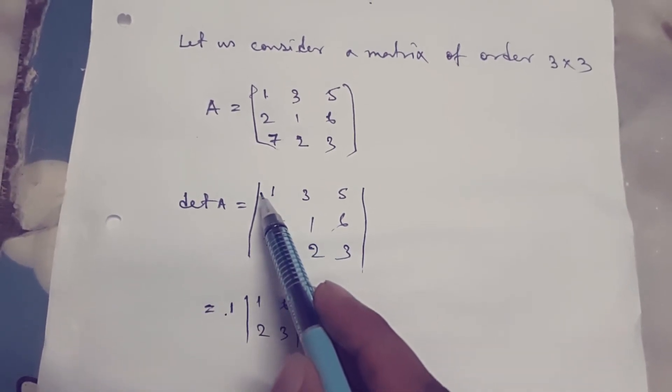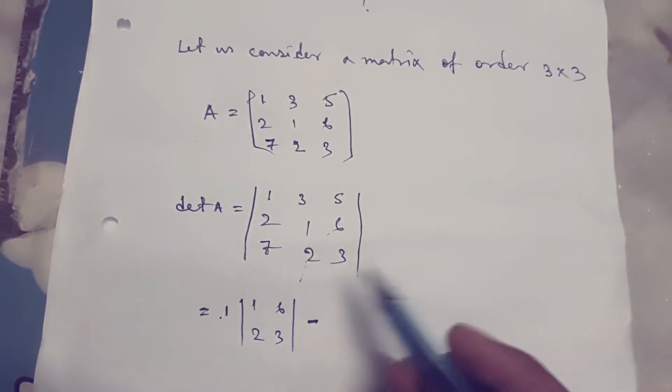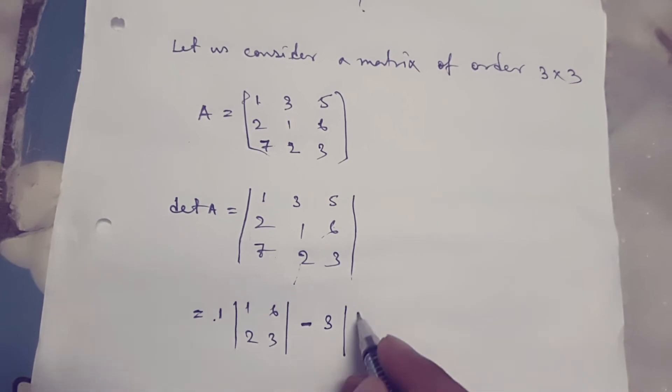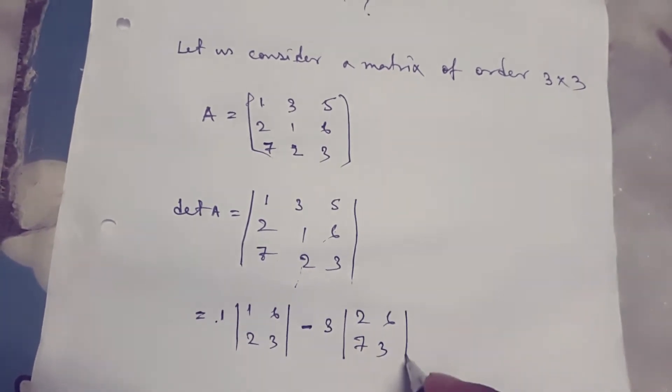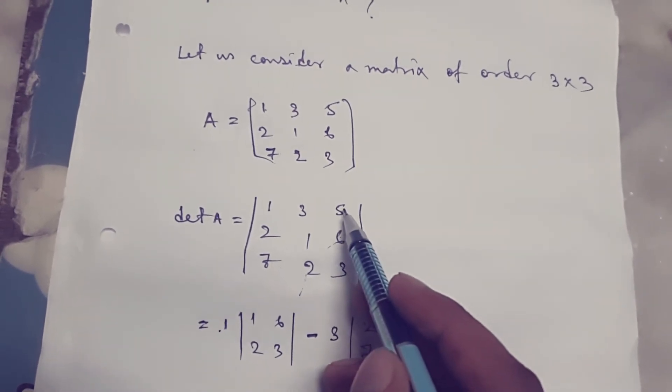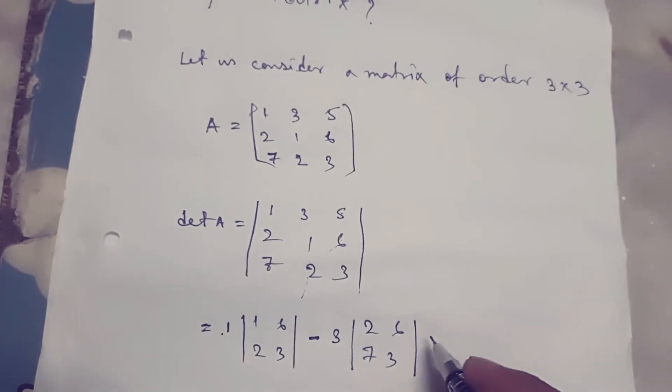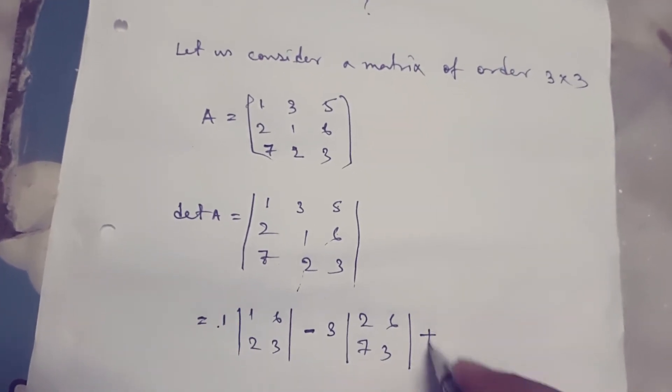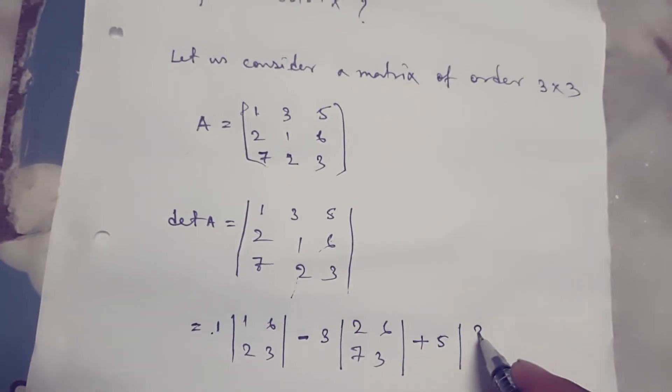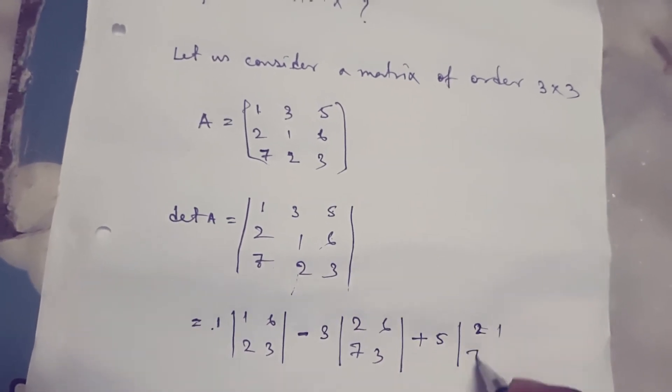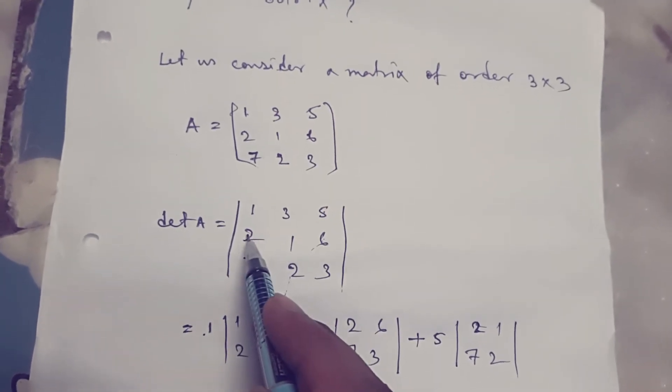The corresponding minor is 2, 6; 7, 3. Then we consider element 5, and the corresponding minor is in the positive place: 2, 1; 7, 2.